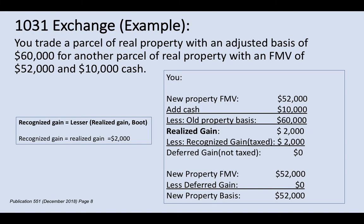So the new property basis is $52,000 because you have no gain deferred. You can test this: if you turn around and sell this new property you just exchanged, do you pay any taxes? The answer is no, you do not pay any taxes on it, because we already established you have no deferred gain. That's how you double-check your answer.